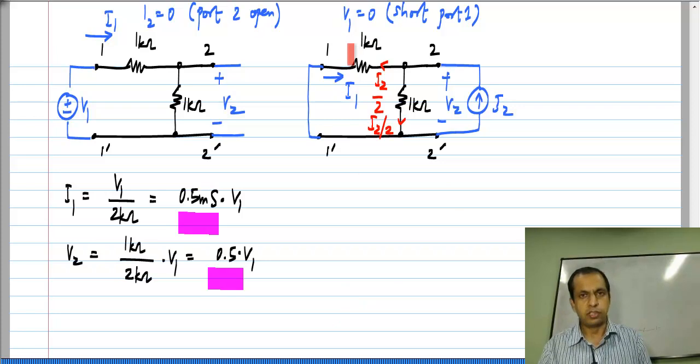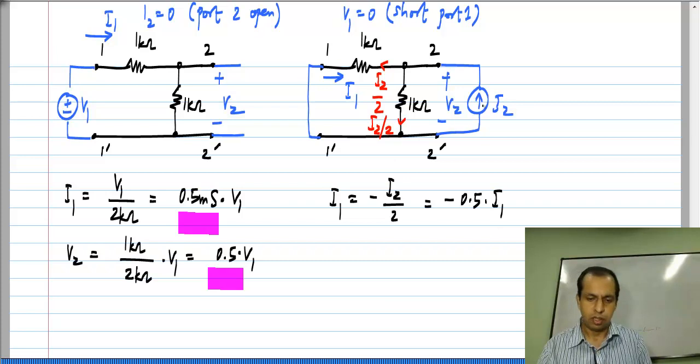This I1 is the same as the current through this resistor but in the opposite direction. So, I1 is minus I2 by 2 or minus 0.5 times I2.